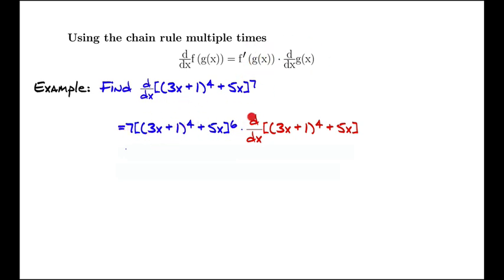We took f prime, which was 7 something to the 6th, of g of x, which is (3x + 1)^4 + 5x. And then we multiply by d dx of this. That's applying this formula directly, and we've postponed the task of finding d dx of this inside function until the next step.